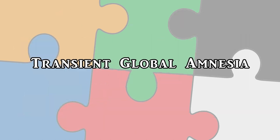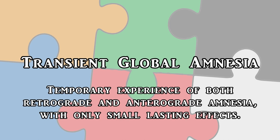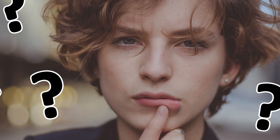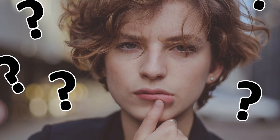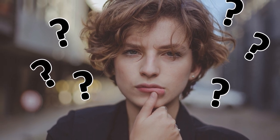Another subtype of amnesia is called transient global amnesia, where a person suddenly experiences both retrograde and anterograde amnesia, but on a temporary basis. During TGA, a person will experience a short episode of defective memory, often lasting only a matter of hours. When a person recovers from TGA, they typically do not recover memories from right before or during the episode, but otherwise their memory abilities return mostly to normal.